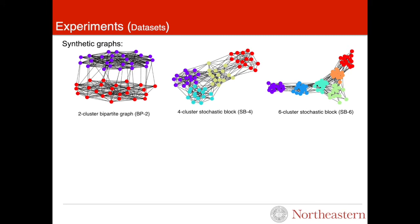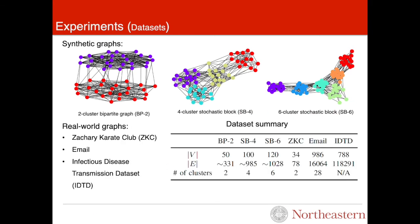We perform a series of experiments on synthetic and real-life graphs. In our synthetic graphs, we have a two-cluster bipartite graph, four-cluster stochastic block model graph, and six-cluster stochastic block model graph. We summarize the information for all graphs in this table. We put the number of nodes, number of edges, and number of clusters. We cover a wide range of graph sizes in our experiments.